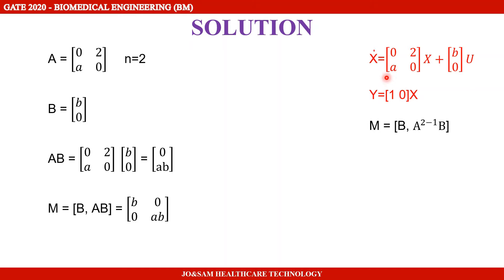Comparing, we identify the system matrix A equals [0, 2; A, 0] and the input matrix B equals [B; 0]. The order of the system matrix is 2. So the controllability matrix is formed using B and A·B.